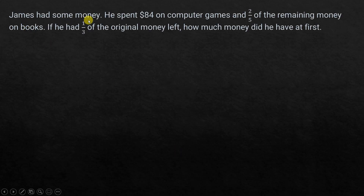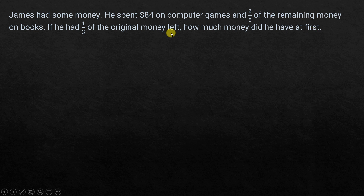James had some money. He spent $84 on computer games and two-fifths of the remaining money on books. If he had one-third of the original money left, how much money did he have at first? This is also called a part-whole problem because you take the whole amount, divide it into parts, and try to figure out the missing quantity.